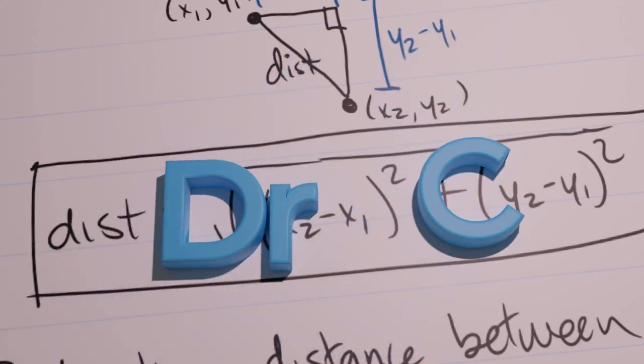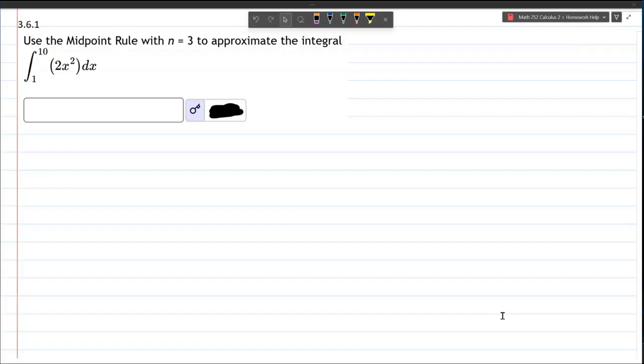We're going to use the midpoint rule to approximate the area represented by this integral. And again, we're going to approximate the area. We're not going to get the exact value.